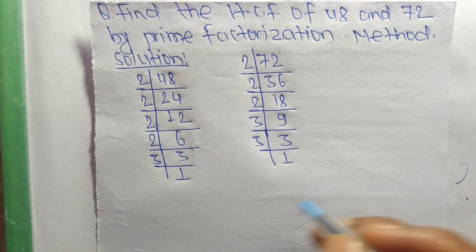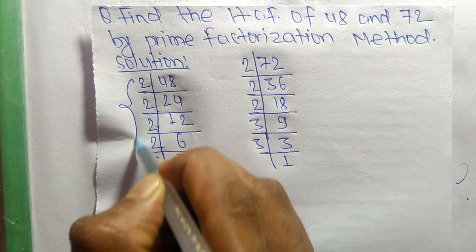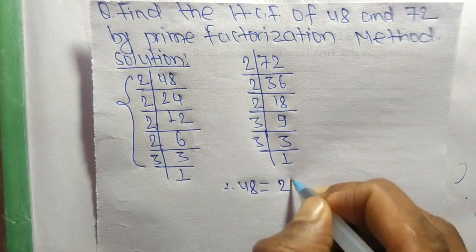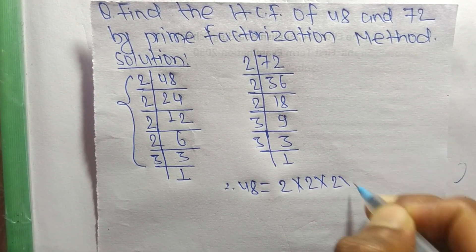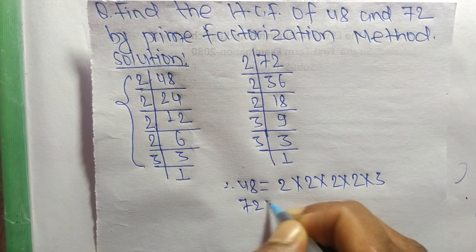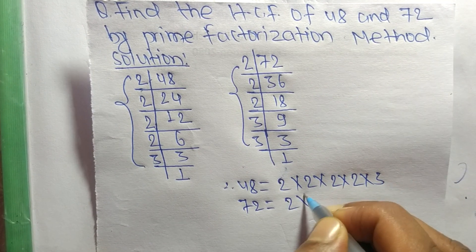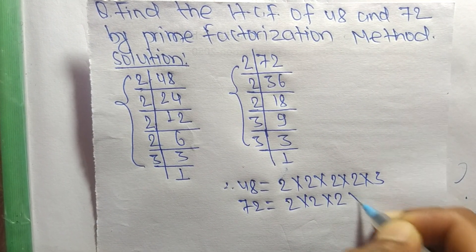So now from these prime factors we can write 48 is equal to 2 times 2 times 2 times 3. Like as 72 is equal to 2 times 2 times 2 times 3 times 3.